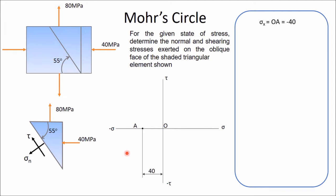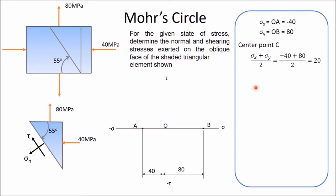Proportional to 40. Similarly, mark 80 MPa — this is tensile, so sigma Y is positive 80. Mark point OB at a distance of 80. In this way you have represented these two normal stresses. Determine the center point of AB using the relation (sigma X + sigma Y) / 2. So (80 − 40) / 2 gives you 20.